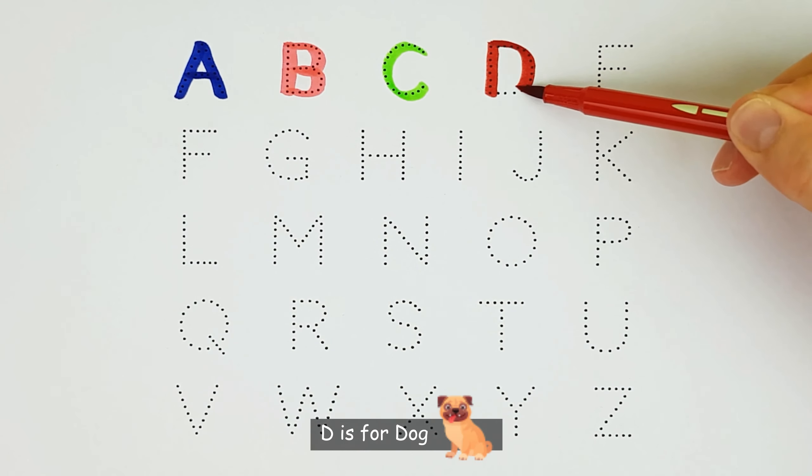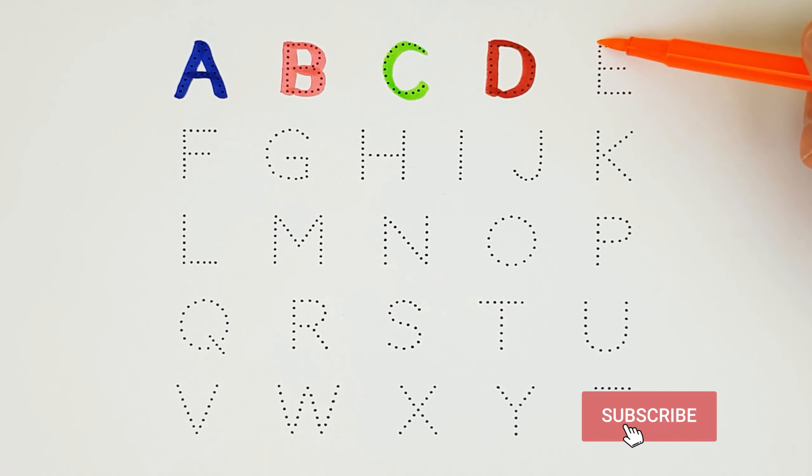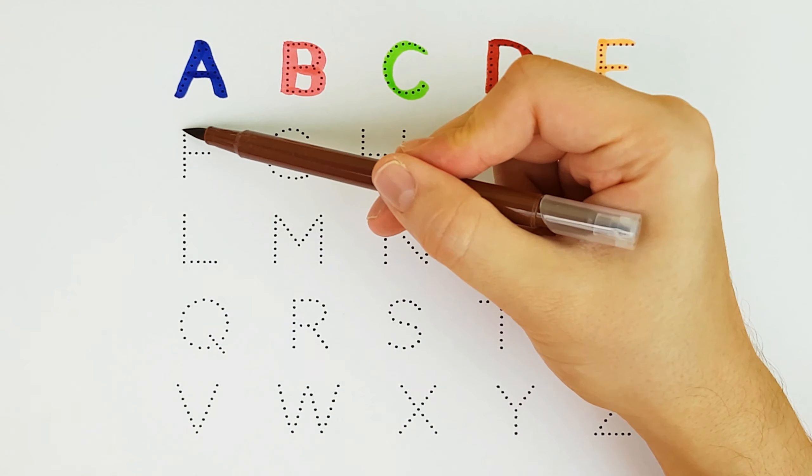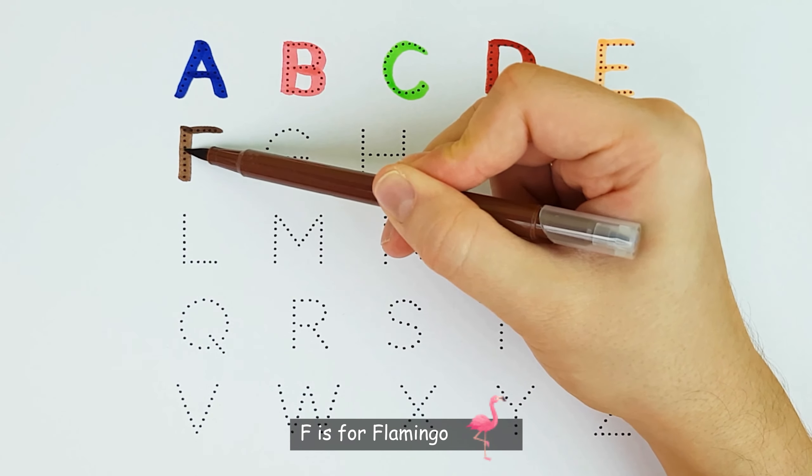D. D is for Dog. D. E. E is for Egg. E. F. F is for Flamingo. F.